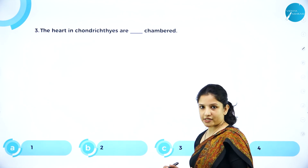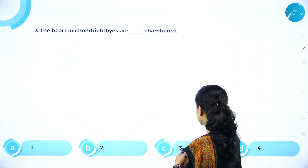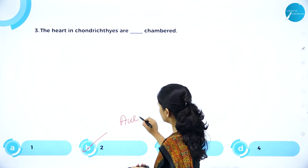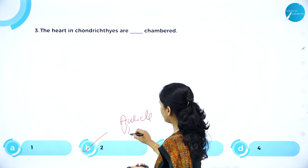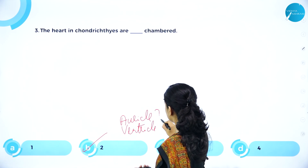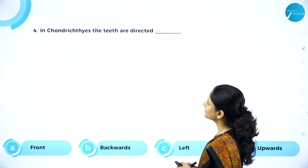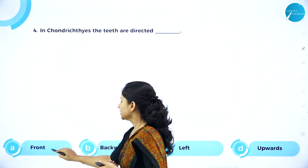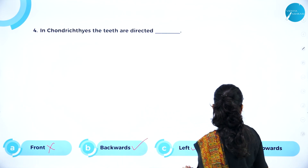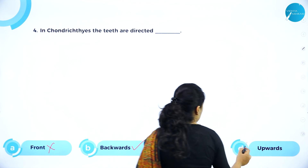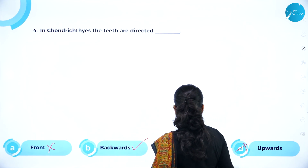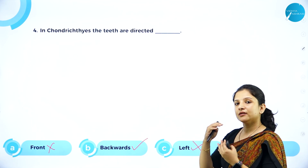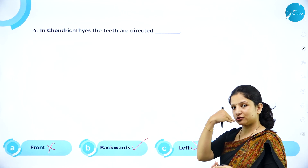MCQ: The heart in Chondrichthyes is how many chambered — one, two, three, or four? The answer is two-chambered: one auricle and one ventricle. MCQ: In Chondrichthyes, the teeth are directed — towards the front, backwards, to the left, or upwards? Option B is the right answer — they have jaws and teeth, but the teeth are directed backwards, that is towards the inside of the mouth.